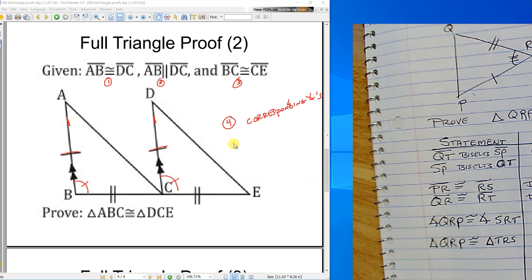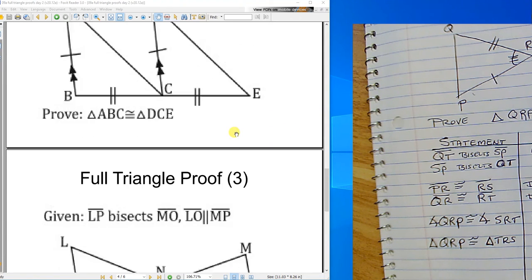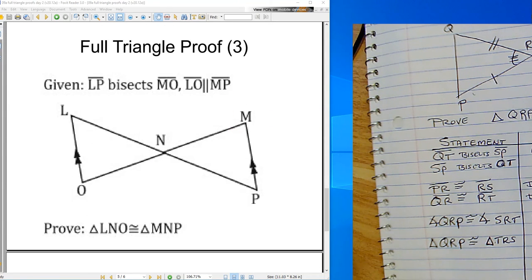and then my fifth line of my proof would be side angle side so that's what your proof would be but you have to write it all down into columns because you couldn't just turn this in and say oh this is my proof